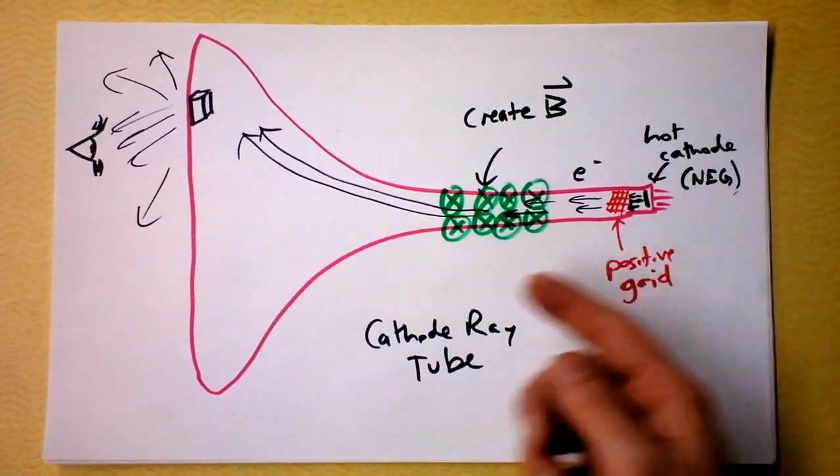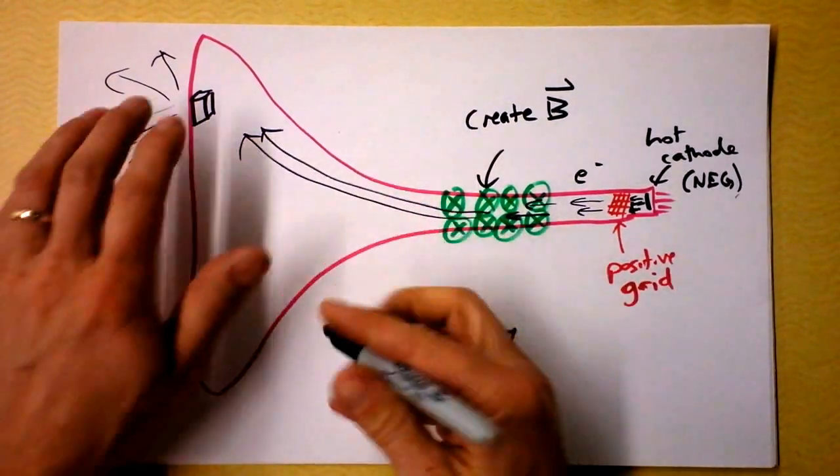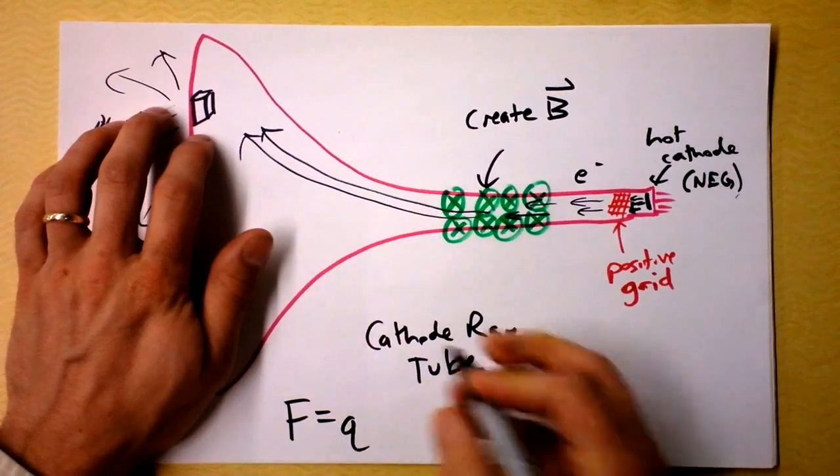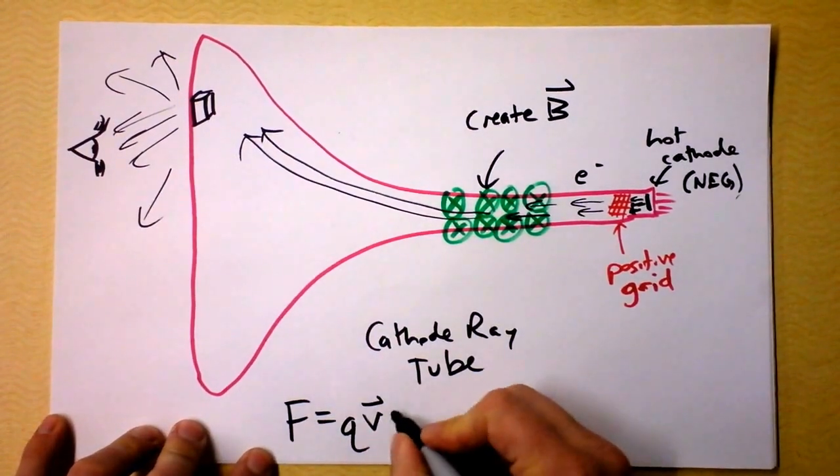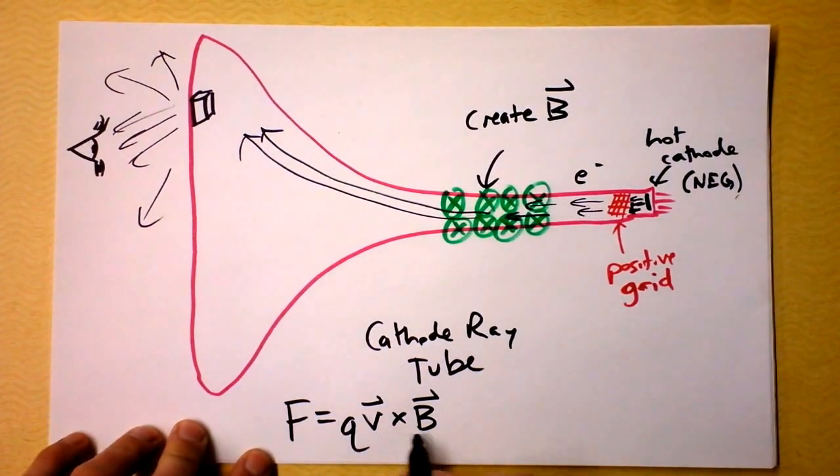So the electrons are going to be aimed up there because of the presence of a magnetic field, and that force is the charge of the electron times the velocity of the electron crossed into the magnetic field. And remember, V cross B requires that V be at least somewhat normal to B. If it's not entirely normal to B, that's okay.